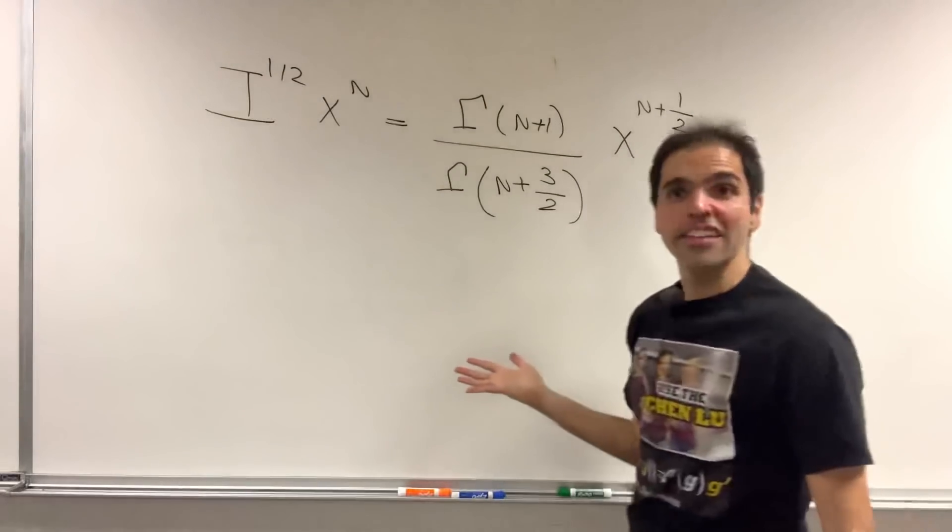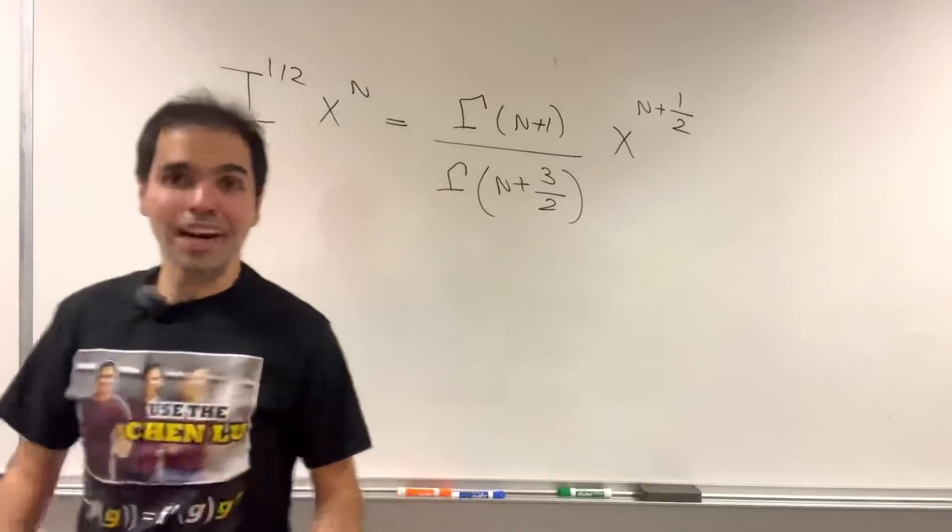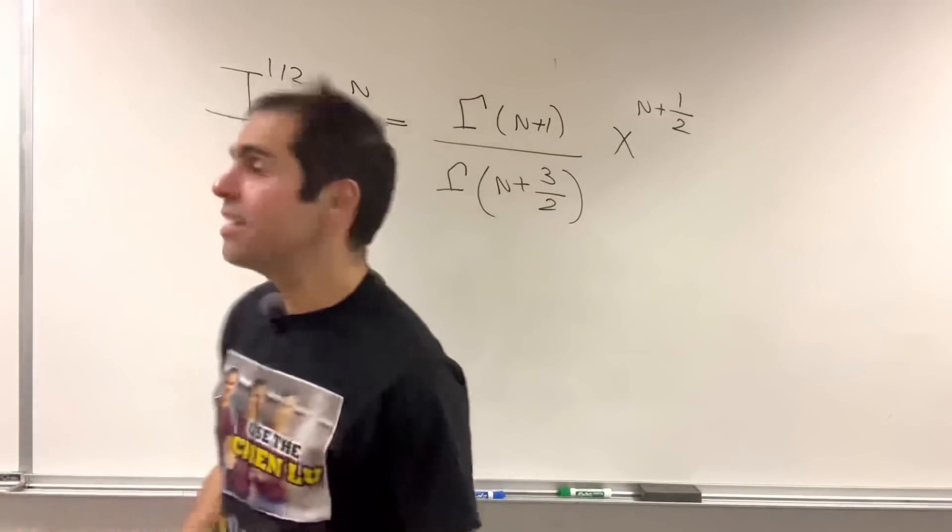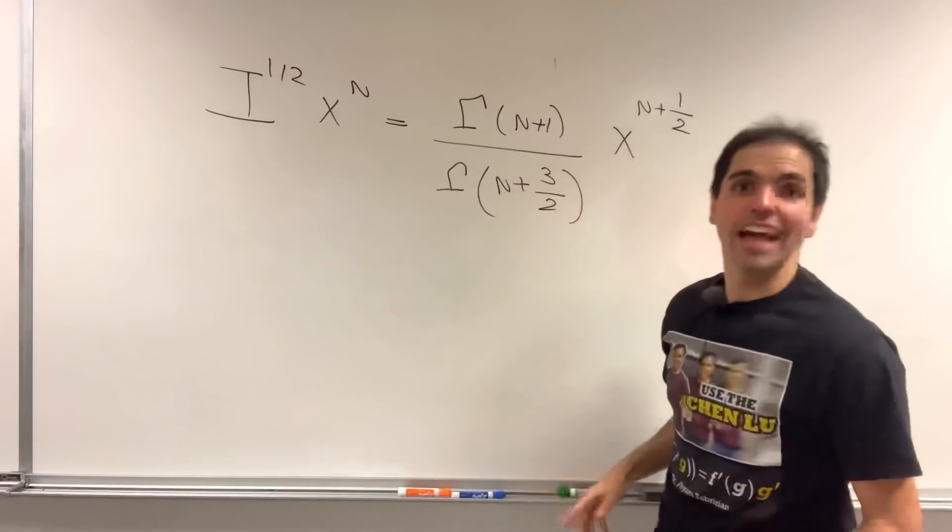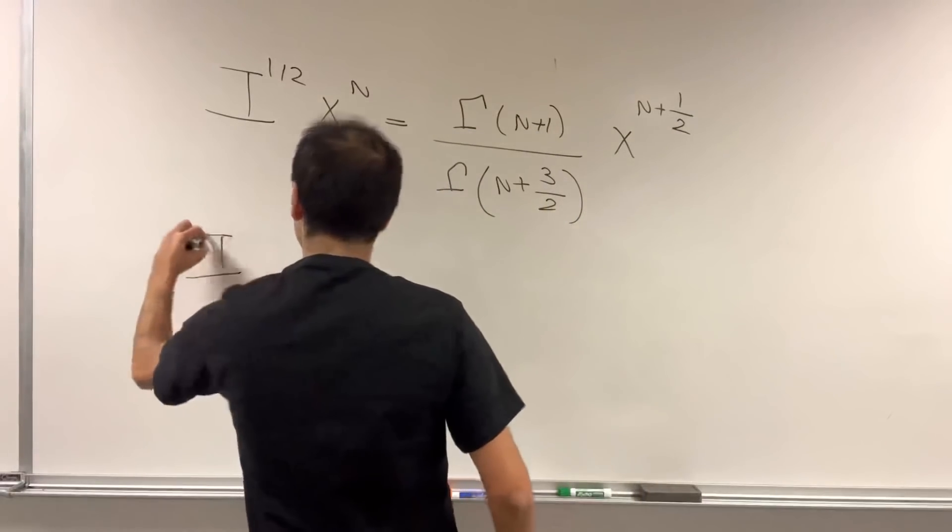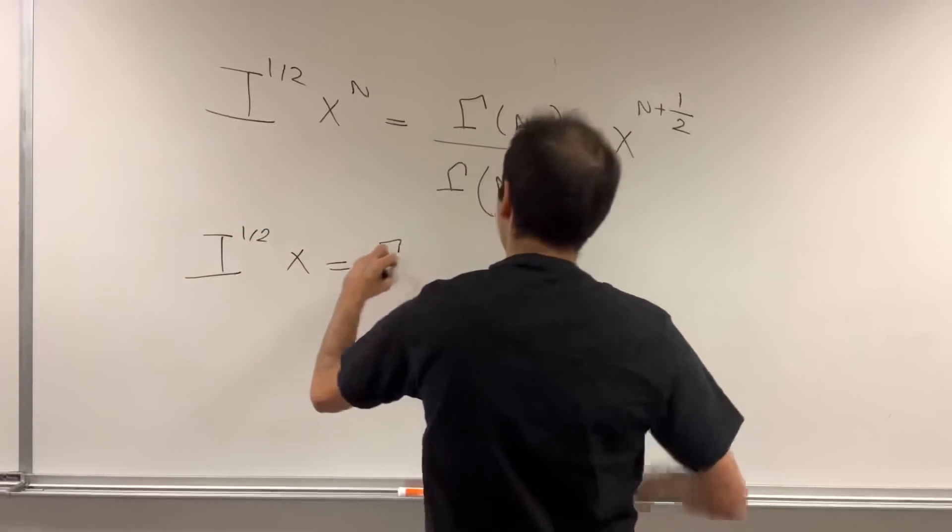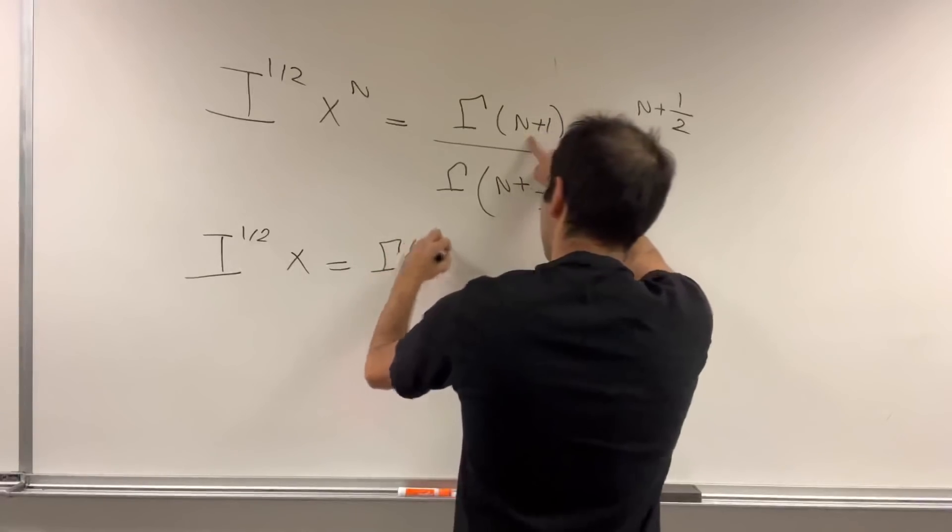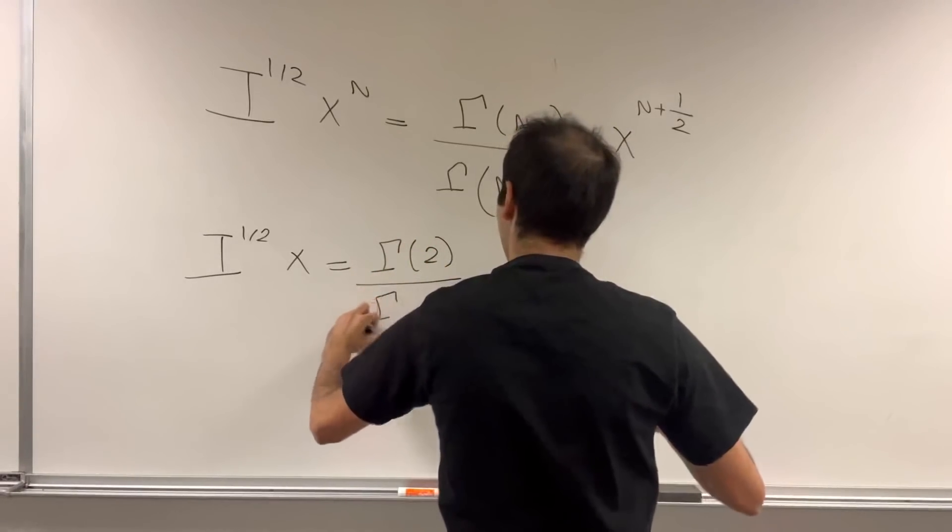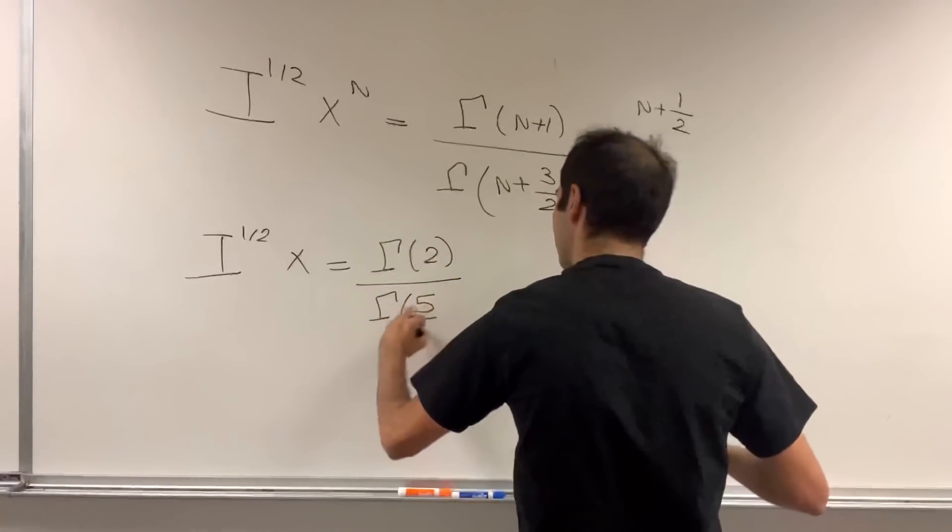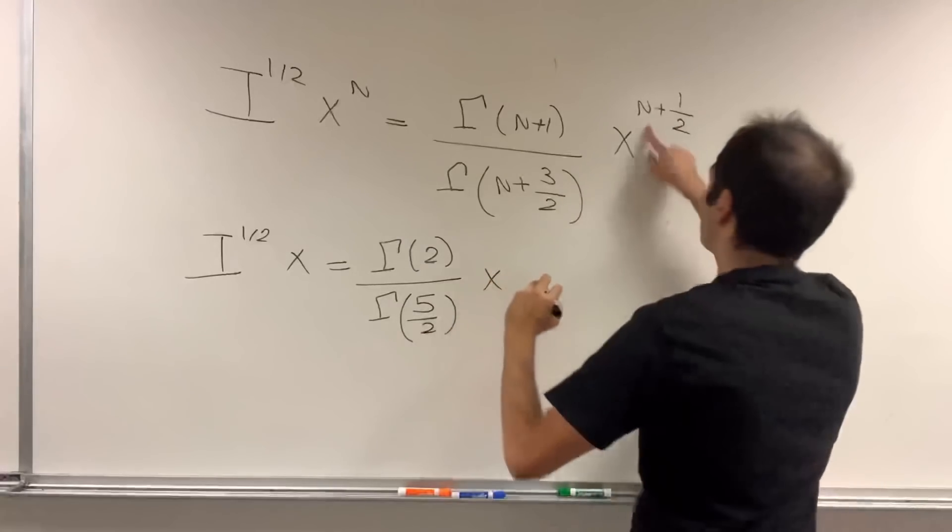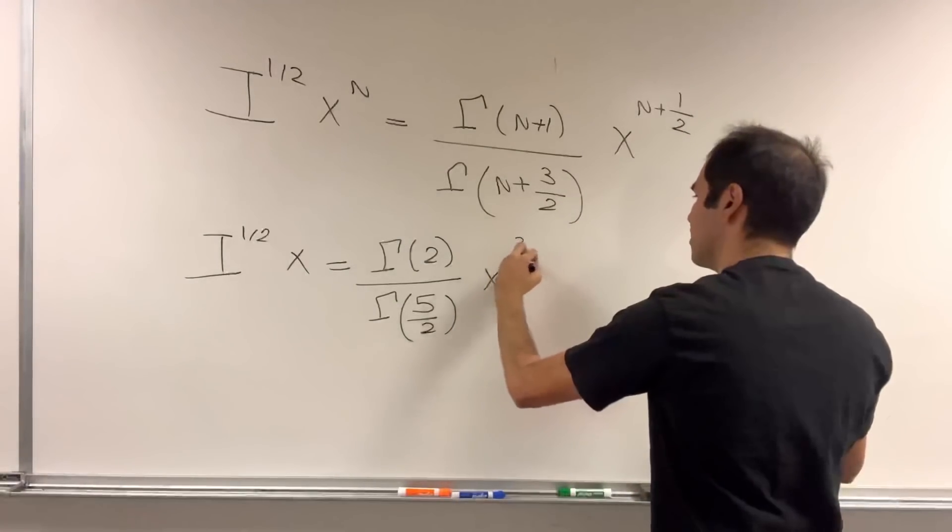And finally, we can now define the half integral of x simply by plugging in n equals 1. So, the half integral of x, that becomes now gamma of 2 over gamma of 5 halves, x to the 3 halves.